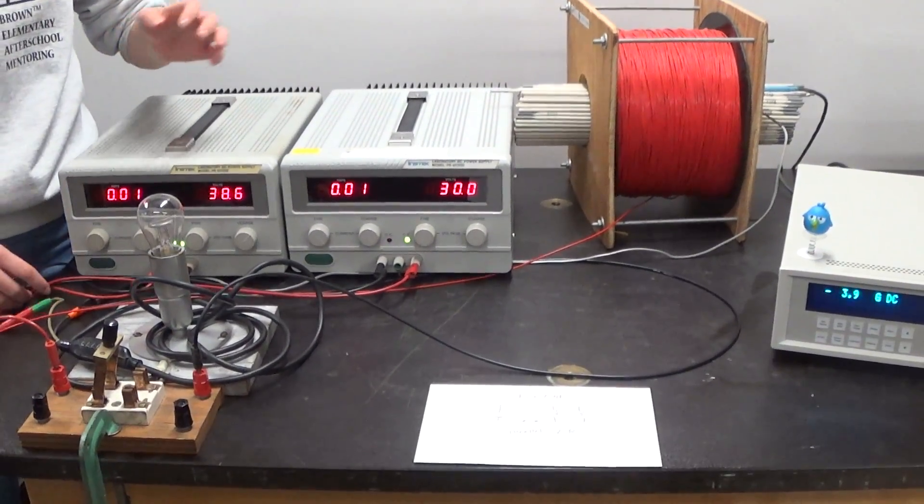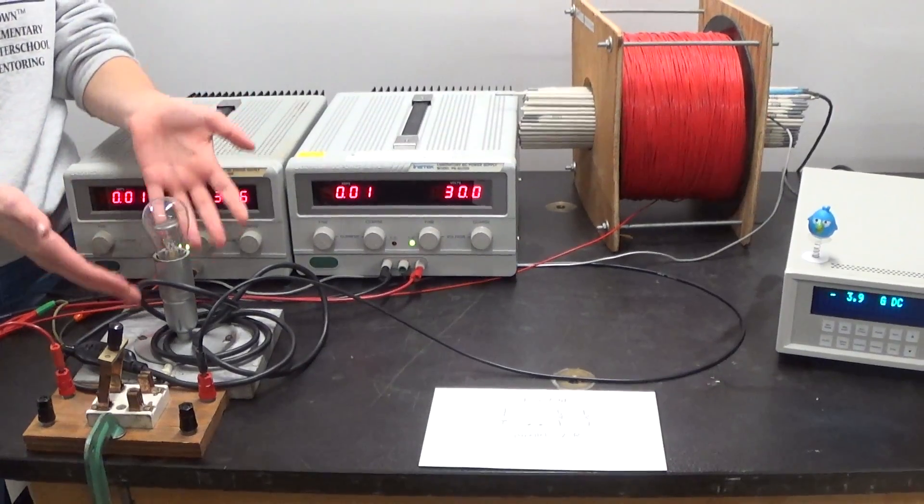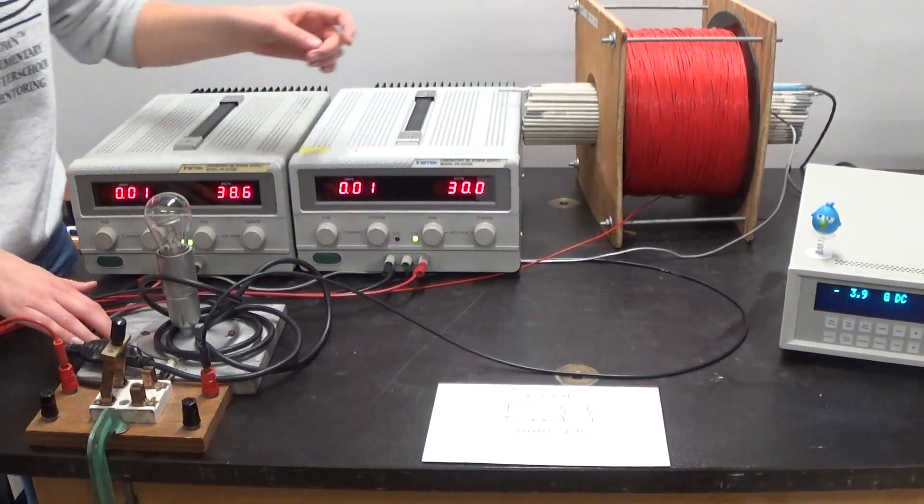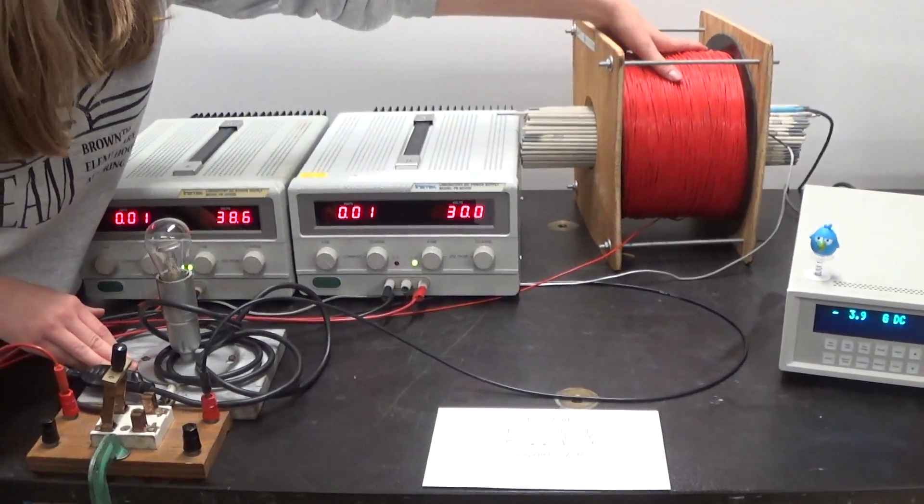And then connected to the batteries, we have this resistor, which is just a light bulb. And the light bulb is wired in parallel with this inductor here.